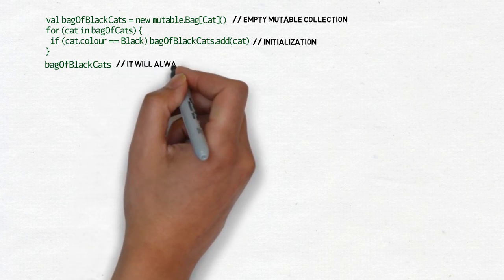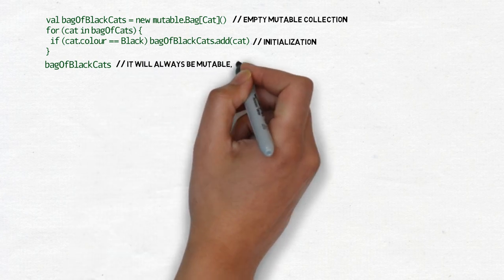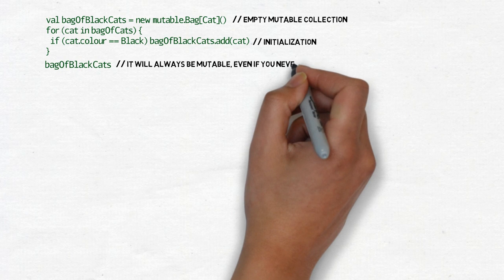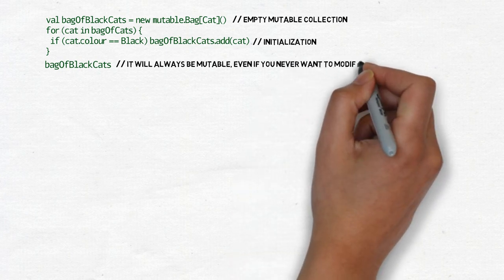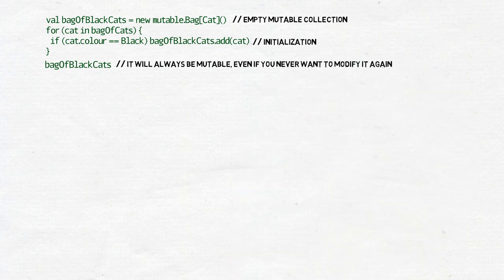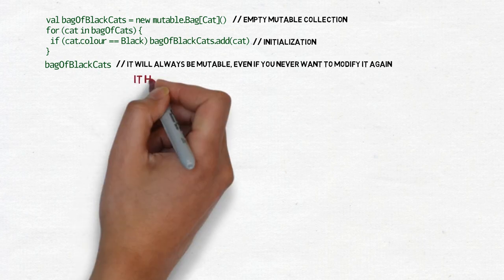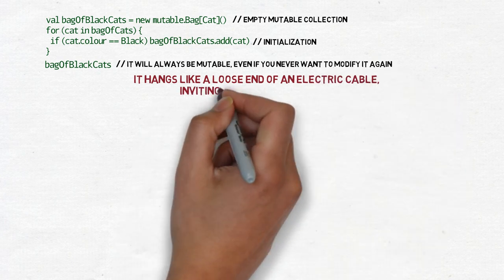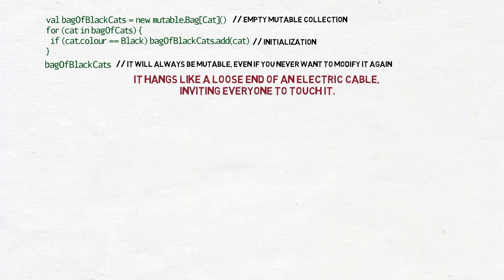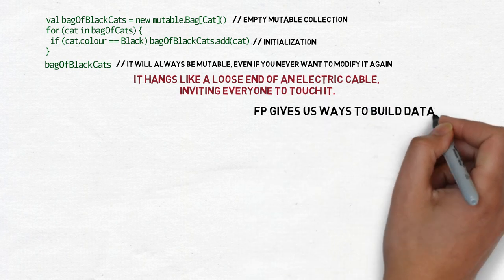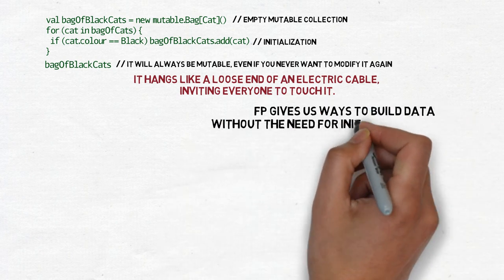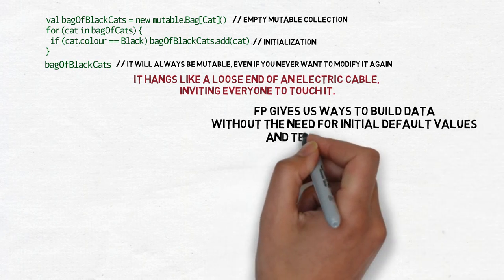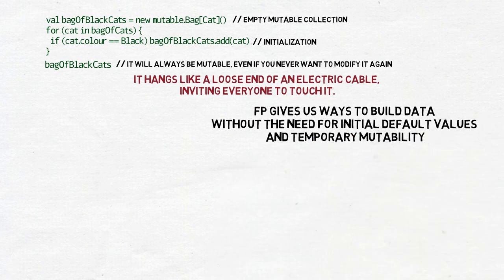the value assigned to the variable does not change anymore. Or if it does, it's done in a way that could be replaced with resetting the variable to its default value and running the initialization again. But the possibility to modify it stays, even though not needed. For the whole life of the program, it hangs like a loose end of an electric cable, inviting everyone to touch it.